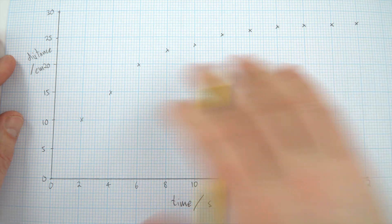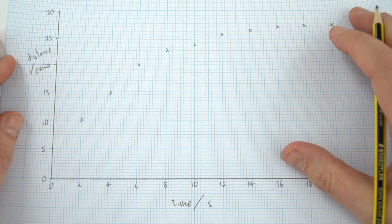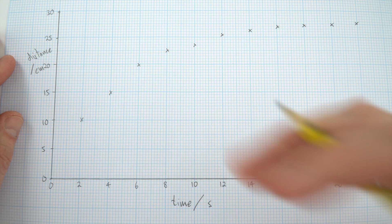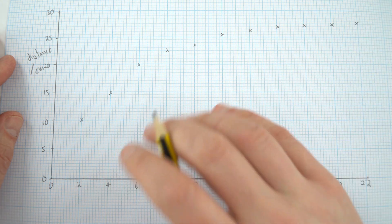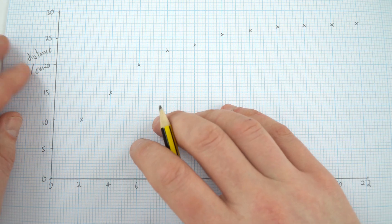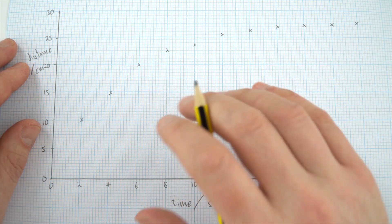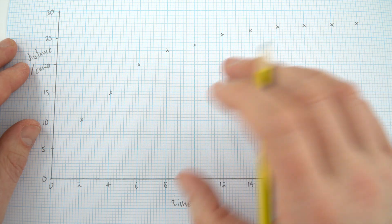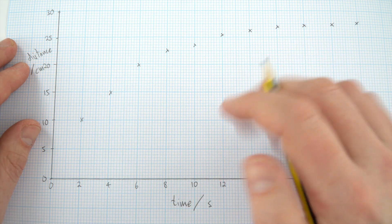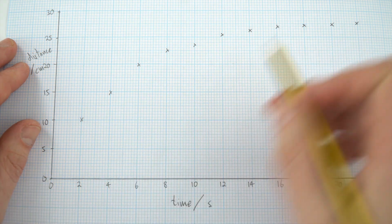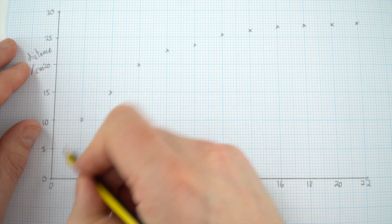You plot your data making sure it covers as much of the page as possible, and then it comes to putting in — in this case — a line of best fit. The type of graph and what you do with the data really depends on the practical experiment that you're carrying out. If it's a curve like this, I'm just going to put in a curved line of best fit.